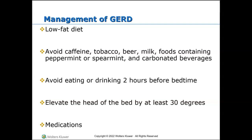Management of GERD includes having a low-fat diet, avoiding alcohol, tobacco, beer, and milk, avoiding foods that contain peppermint or spearmint, avoiding carbonated beverages, and avoiding eating or drinking two hours before bed. Make sure to elevate the head of the bed by at least 30 degrees. For mild GERD symptoms, in addition to lifestyle changes, we might initiate a non-prescription antacid like Tums or Maalox — which help neutralize stomach acid and are commonly used for short-term relief of heartburn — or a histamine receptor antagonist. Prescription medications might include a proton pump inhibitor or an H2 receptor antagonist.